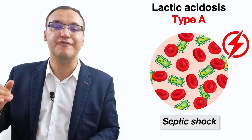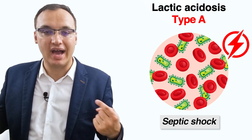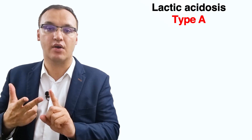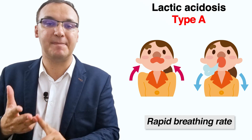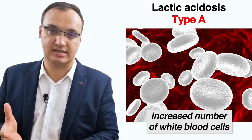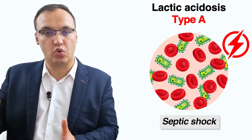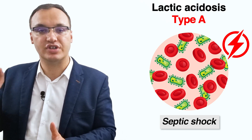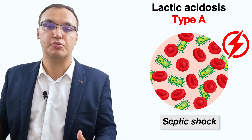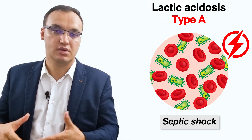Sepsis is due to an infection that triggers a severe body-wide response, including fever, weakness, rapid heart rate, rapid breathing rate, and an increased number of white blood cells. It can lead to septic shock, which causes dangerously low blood pressure, resulting in internal organs typically receiving too little blood and causing them to malfunction.